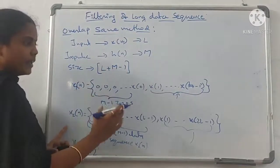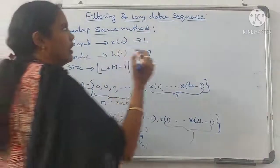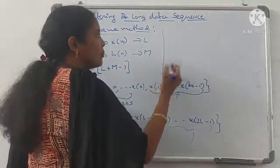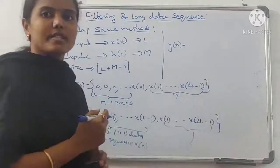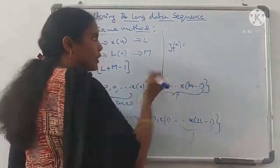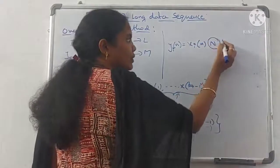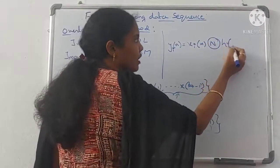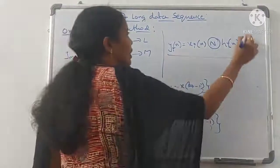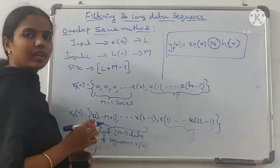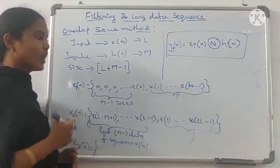After dividing the total x(n) into different blocks, you find y(n). y(n) is equal to xi(n) circular convolution with h(n). Using this formula, you find the total y(n). Now let us see one example for the overlap save method.